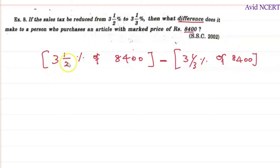So this can be found by two ways: which 3 1/2 percent first found for 8400 and 3 1/3 percent for 8400 and we can subtract the values, or we can first subtract the percentages and then we can find the value. Whenever there is a mixed fraction we have to first convert it into improper fraction.